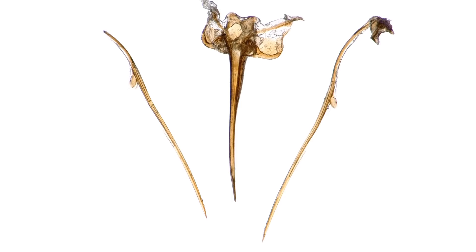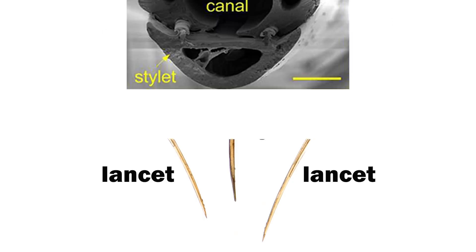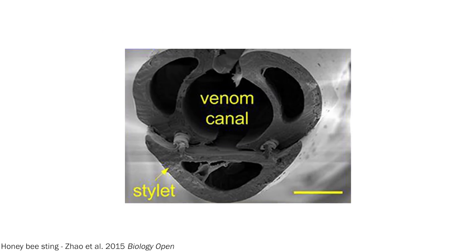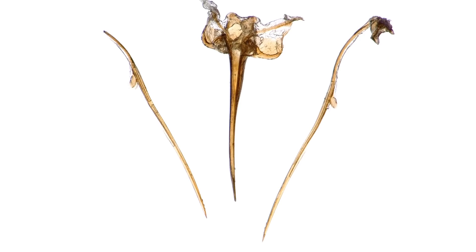Stingers are made up of three parts, a stylet and a pair of lancets. The lancets attach to the stylet and form a hollow canal through which venom is pumped. In some ants, like harvester ants, the tips of the lancets are barbed, while others, like this trap jaw ant stinger, are smooth and more needle-like.